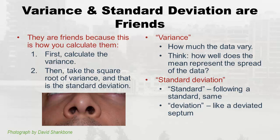Variance is a calculation for how much things vary, and standard deviation is its square root. Just remember what variance literally means and what standard deviation literally means — that might help you get through these formulas and understand the interpretation. Students often confuse measures of central tendency with variation, but variation is a totally different thing.